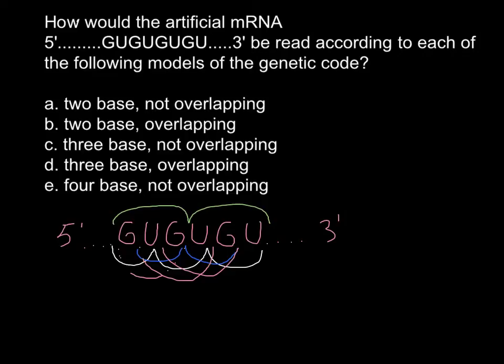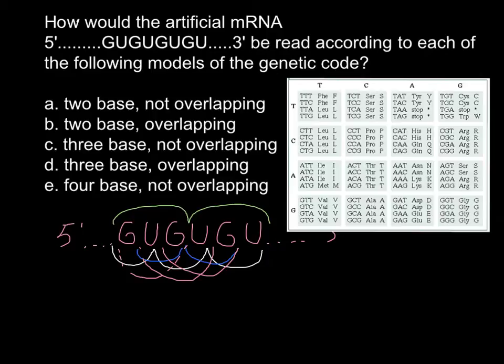The answer is given in this table, the product of research by many scientists. They made many experiments and determined that proteins are coded by triplets — three nucleotide bases. We have 20 amino acids, and those 20 amino acids are coded by triplets.